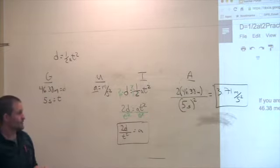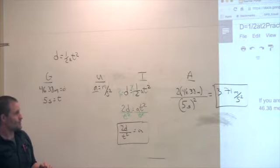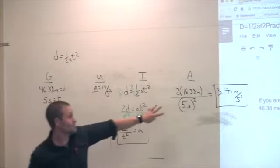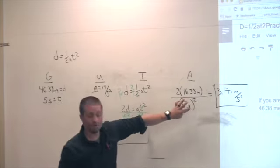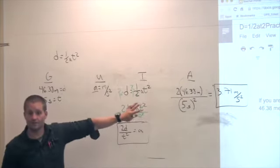Would it also be acceptable to square 3.71? And it just be 3.71 squared? No. Just square the bottom. Good question.